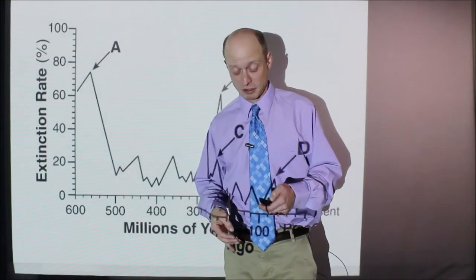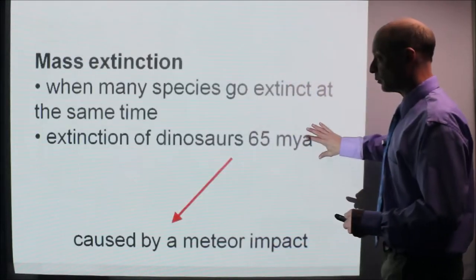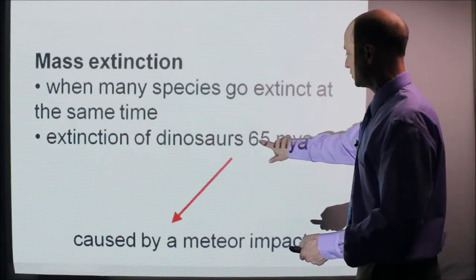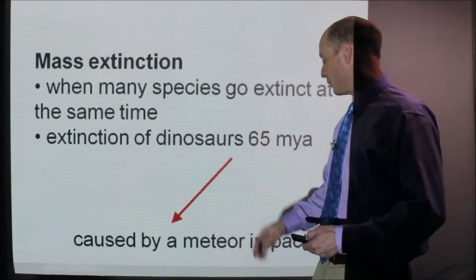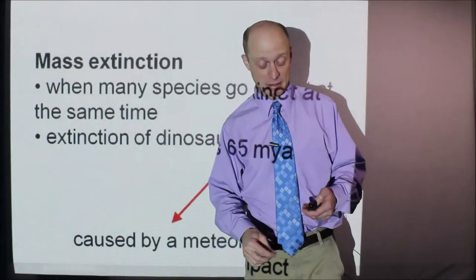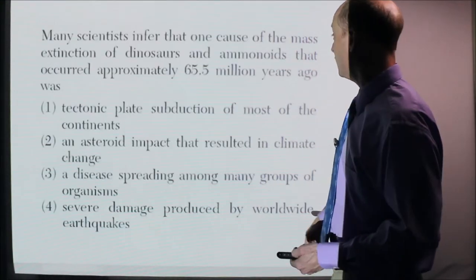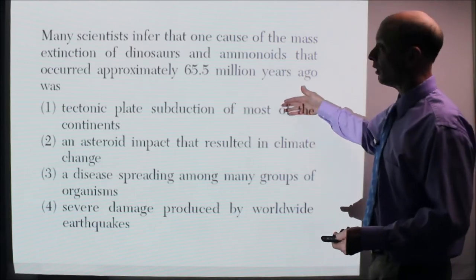The most common one we know of is the extinction of the dinosaurs, which was 65 million years ago. This was caused by a meteor impact. Here's an example question about it.